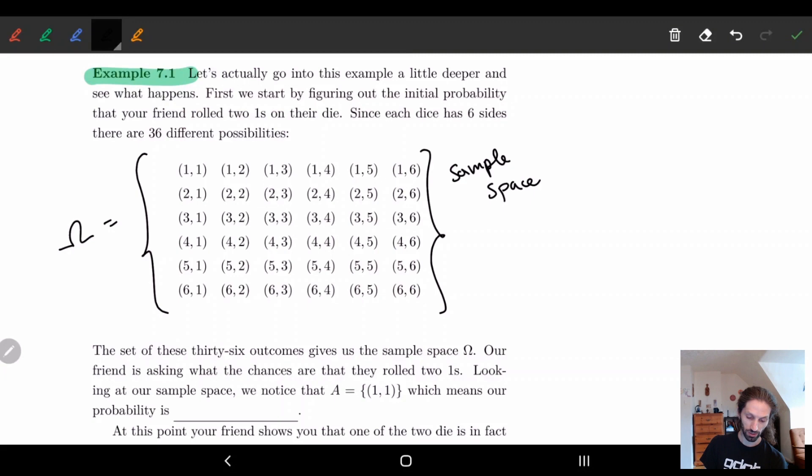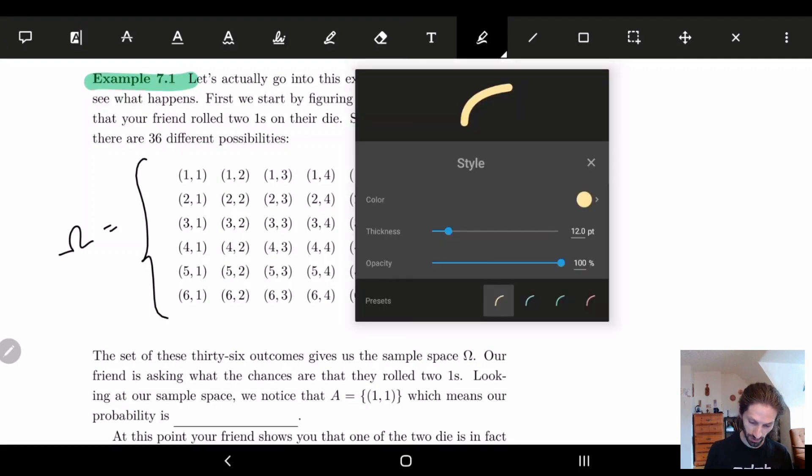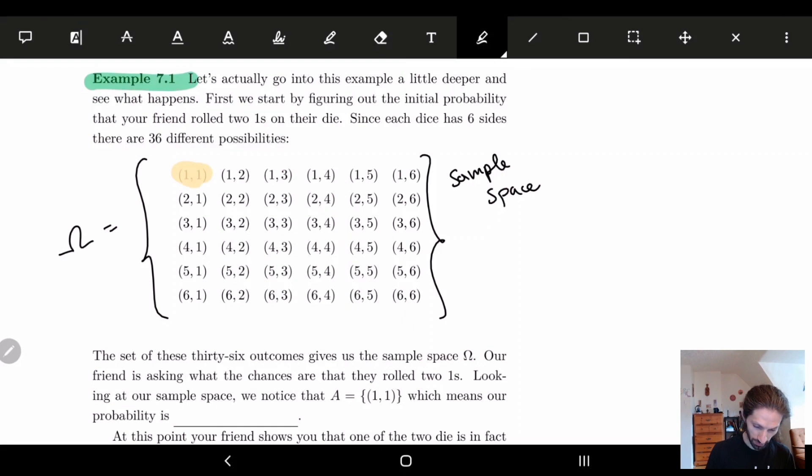And so now our friend is basically asking, well what is the chance of getting two ones? What's that probability? And so we kind of went over this. The way to do probability is you take some subset of your sample space. In our case the subset we're going to take is the one where we have two ones. So there's only one subset like this. It's only this one here.